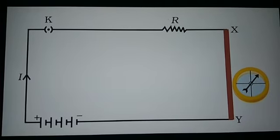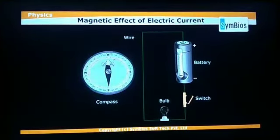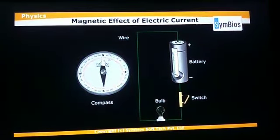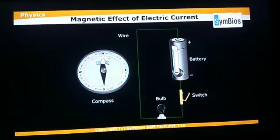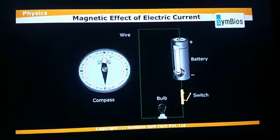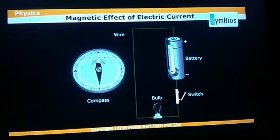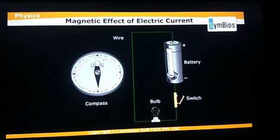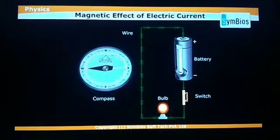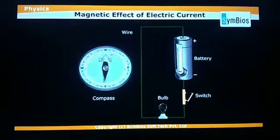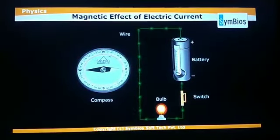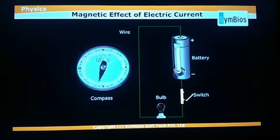Let's see how the magnetic needle gets deflection. There is a battery connecting positive to negative, a switch, and a bulb, with the wire placed nearby the compass. When the switch is on, the bulb glows and the magnetic compass gets deflection from north to east. When the switch is off, the magnetic needle gets back to its original position, deflecting from east back to north.